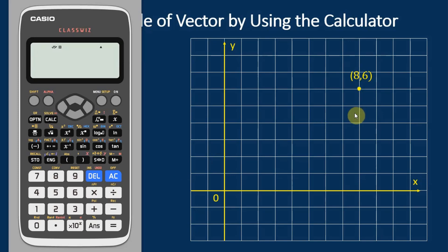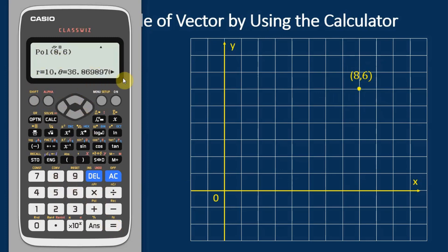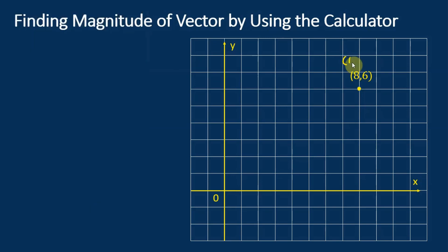Let's say we have a coordinate (8, 6) in the rectangular coordinate system and we would like to convert it to polar coordinates. In the calculator, we use Shift POL, then key in 8, then Shift comma 6, close bracket, and press equal. The calculator shows that for the polar coordinate, r = 10 and θ = 36.9 degrees. That's how we convert a rectangular coordinate to a polar coordinate using the calculator.